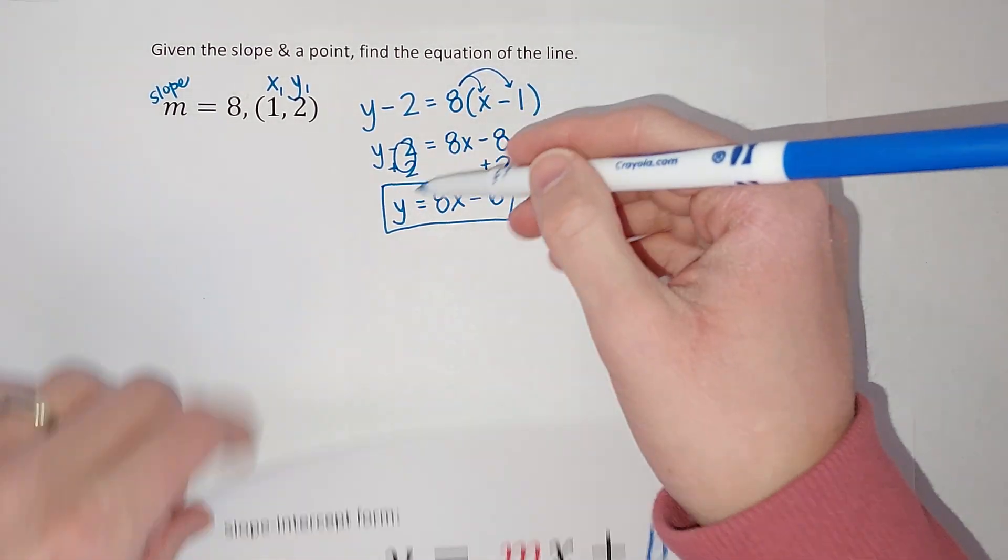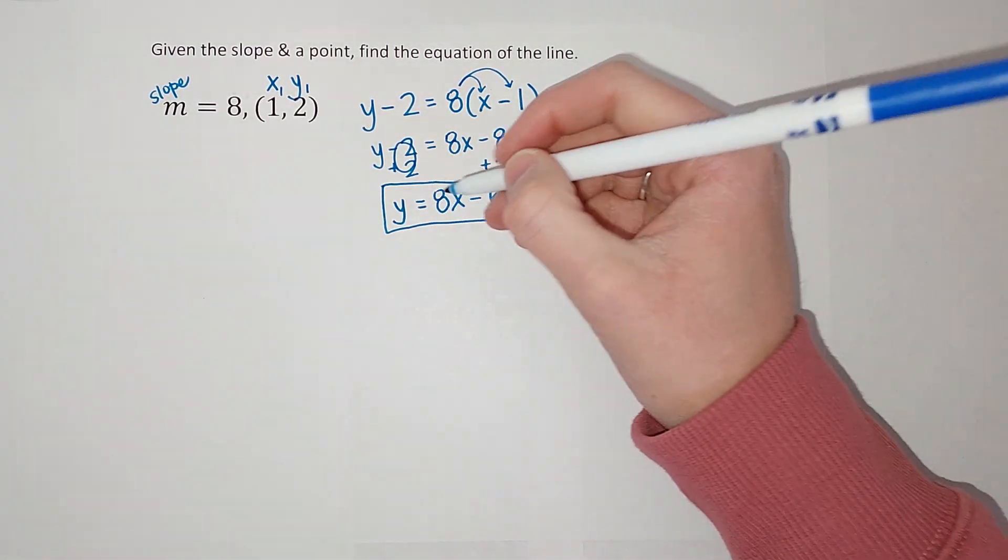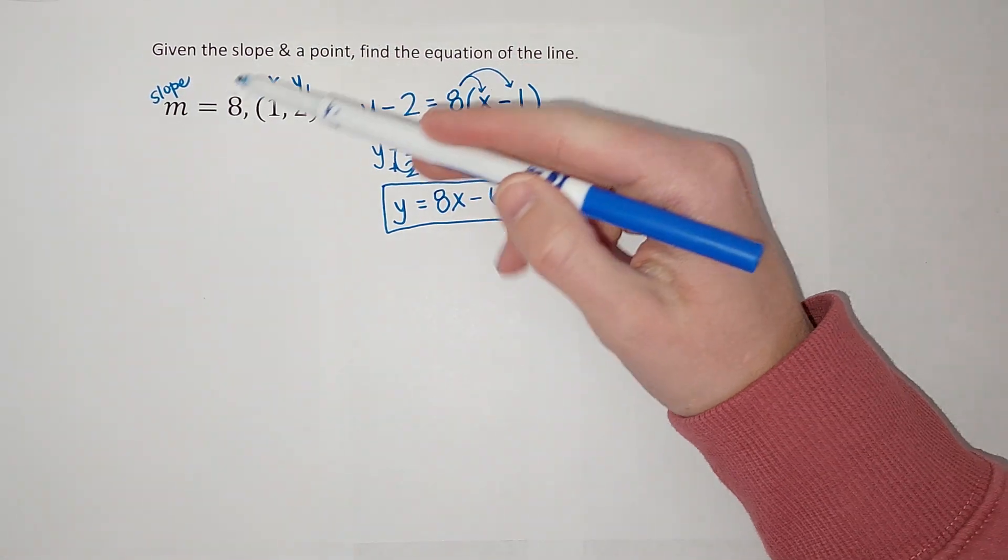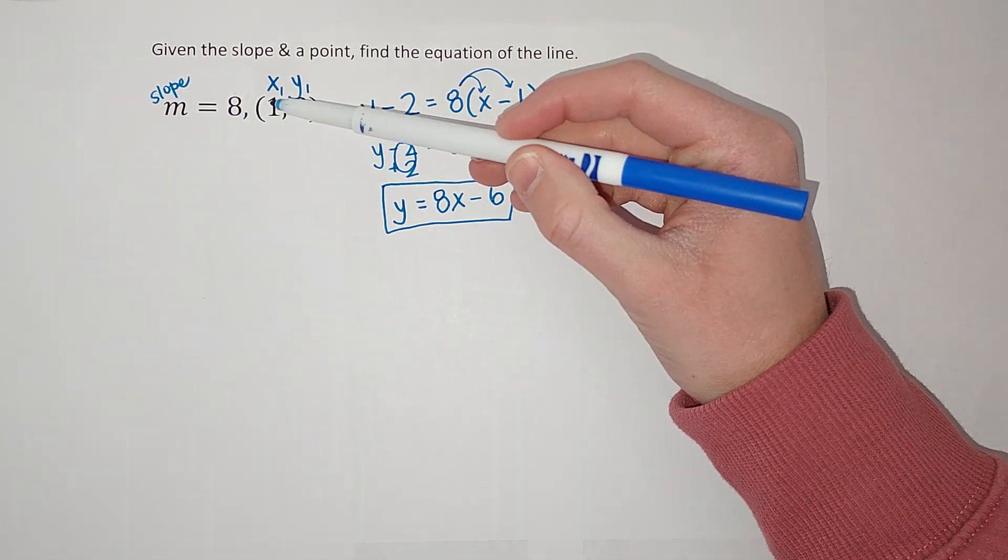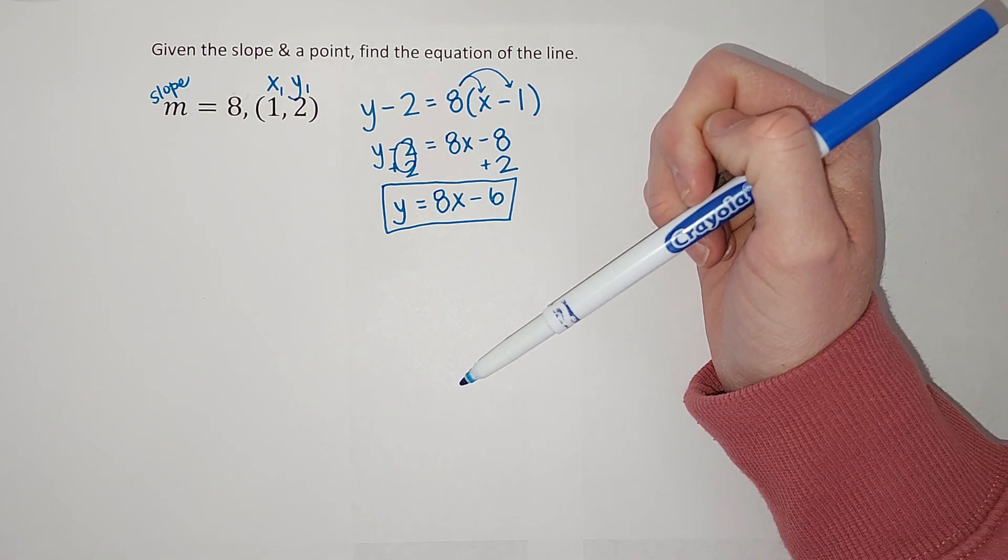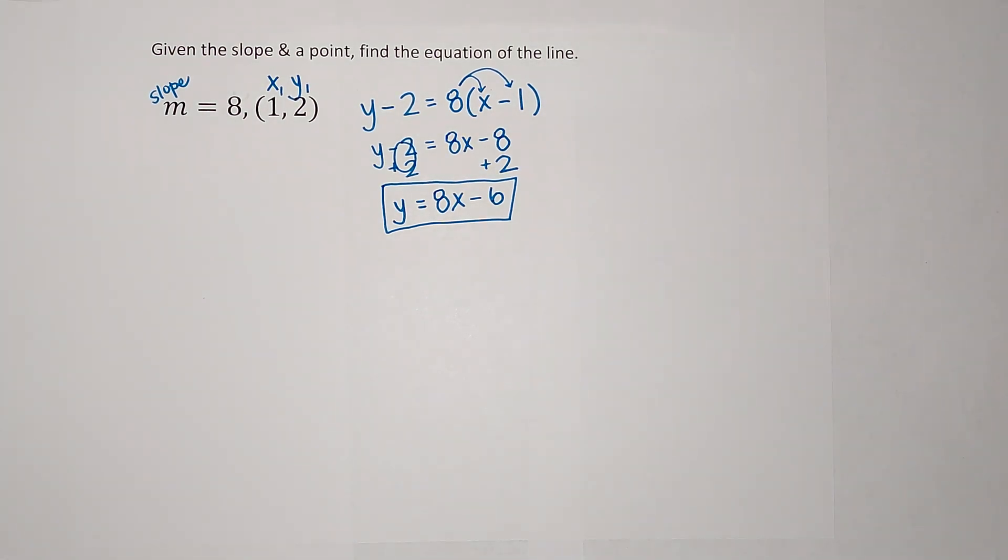So if we were to graph this line, we could if we wanted to check ourselves. It should have a slope of 8 and it should cross the point (1, 2). All right, I have another example with a fraction, heaven forbid, that I will link if you need another example. But hopefully that made sense. Bye!